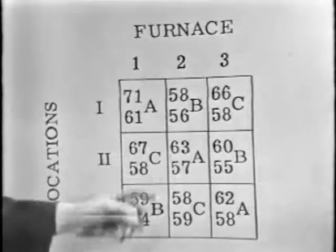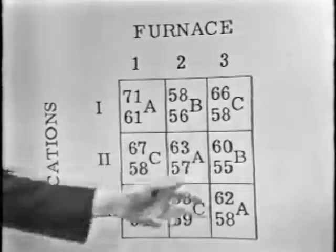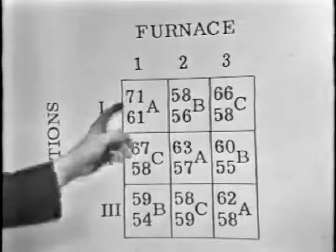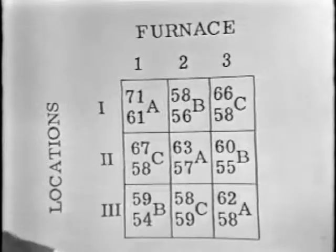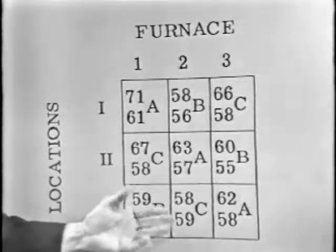What we do here, of course, the first thing we do, after having completed this experimental design, would be to get the average for A, and the average for B, and the average for C, each one of those averages based on six observations.